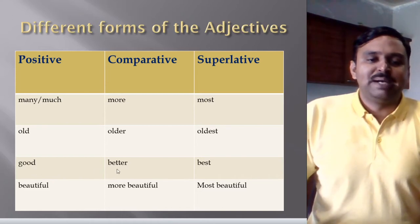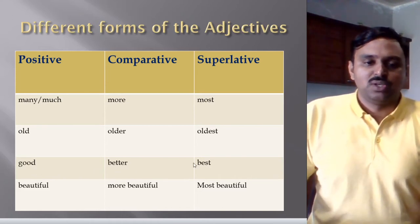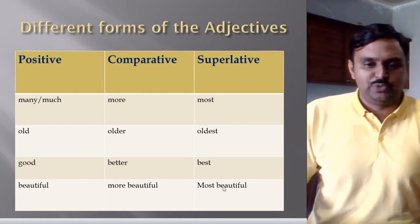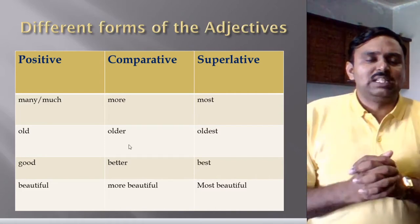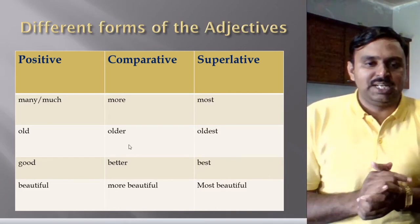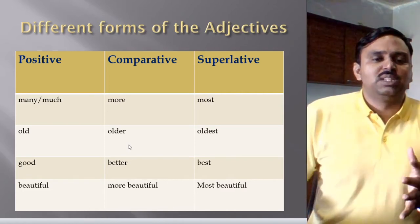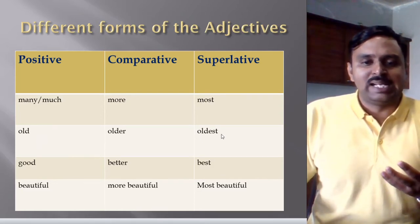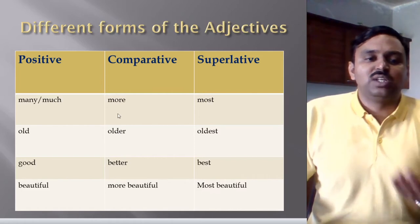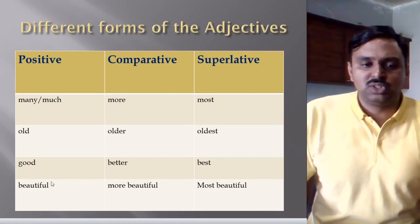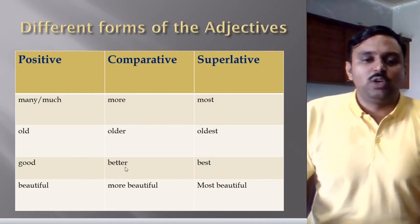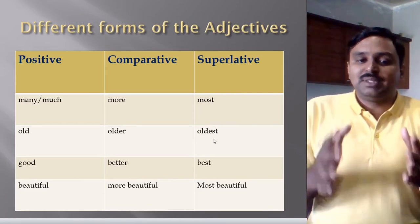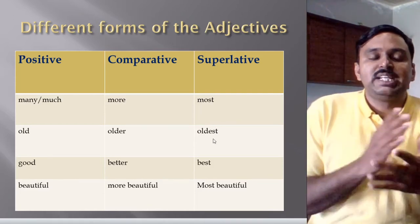Then we have 'good, better, best,' and 'beautiful, more beautiful, most beautiful.' Some words change using '-er' and '-est,' but some change differently — like 'many, more, most' and 'good, better, best.' They do not follow the regular '-er' and '-est' rule. Remember that many degree forms change in different ways, so you must practice them properly.